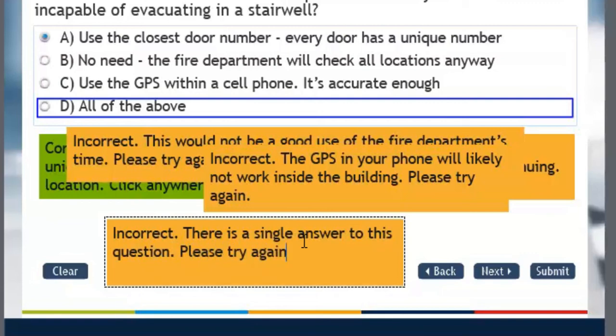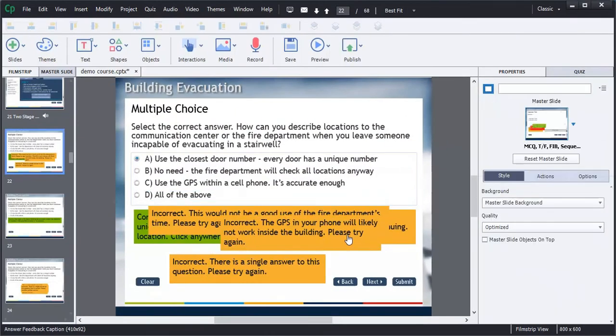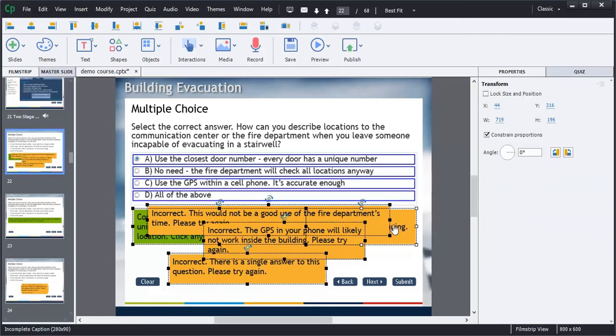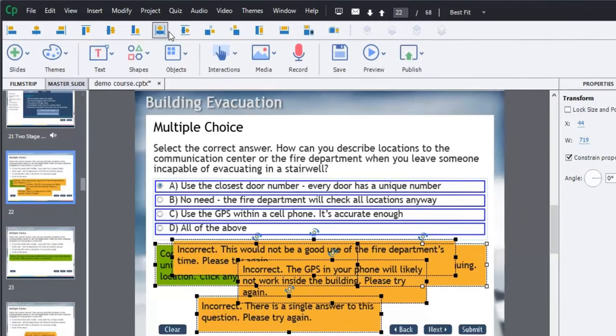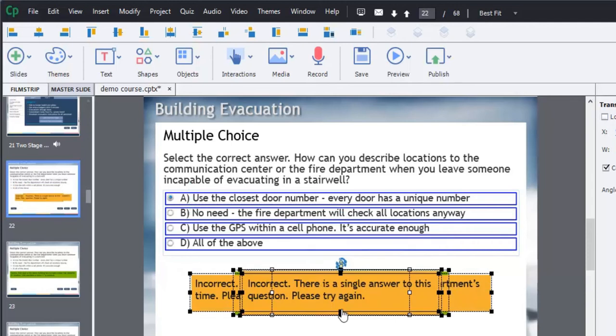So now what we have is we have very specific feedback for every single possible way the user can answer these questions. I'm just going to align these items up in the middle of my screen here and just maybe move them down a little bit. And that looks pretty good.